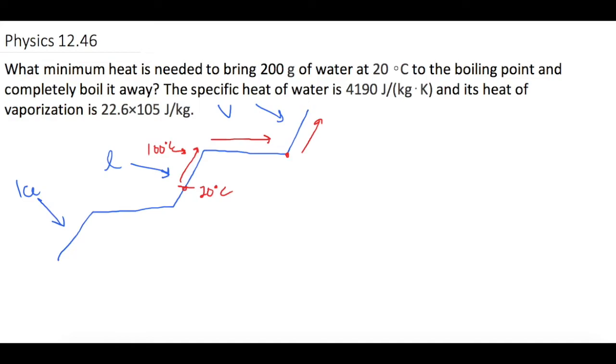So whenever you have a flat part on this diagram, I'll just draw a flat line. So a flat line is equal to plus or minus, depending on which direction you're going, the mass times the latent heat of vaporization for going between liquid and water. Or if we're talking about ice and liquid, it's plus or minus, depending on the direction, the mass times the latent heat of fusion.